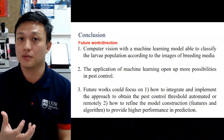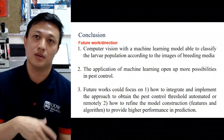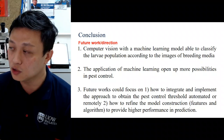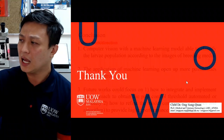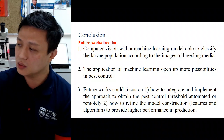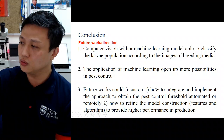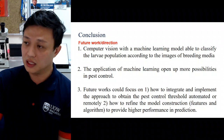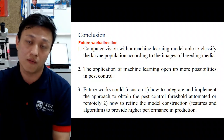It's worth noting this is a classification problem — it assigns a class or level. In the future, it could be reformulated as a regression problem, where the output is a specific number or range, such as 100 to 150 larvae. This application of machine learning has more possibilities in pest control. Our focus is on the pest control threshold — finding better ways to estimate population so we can make informed decisions.